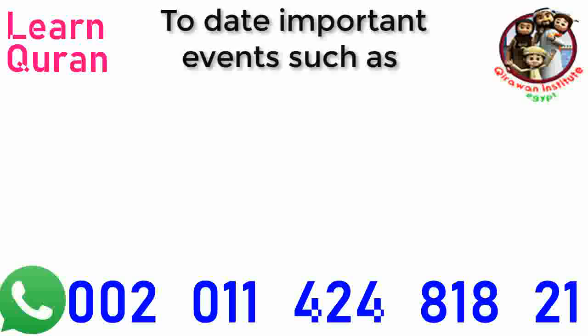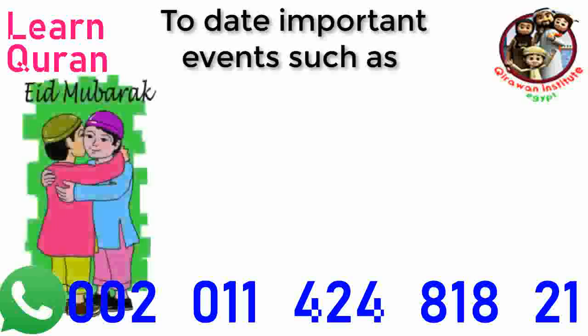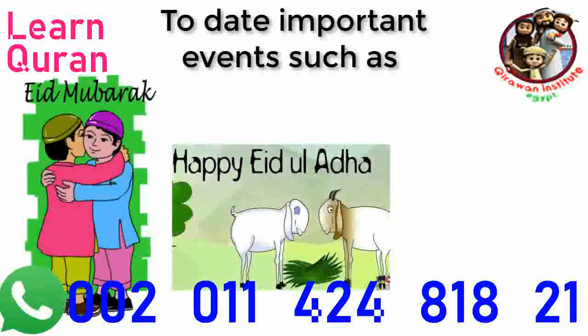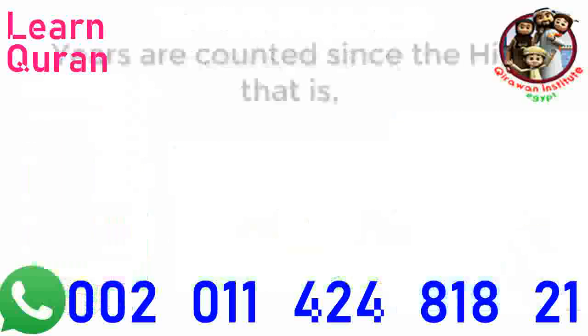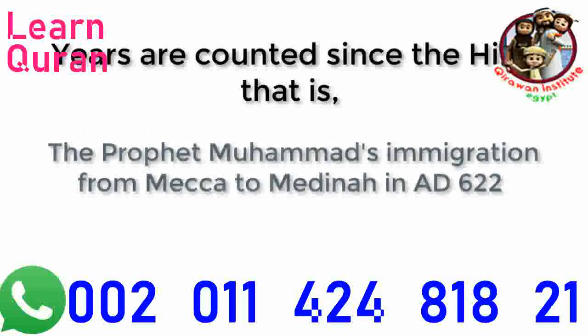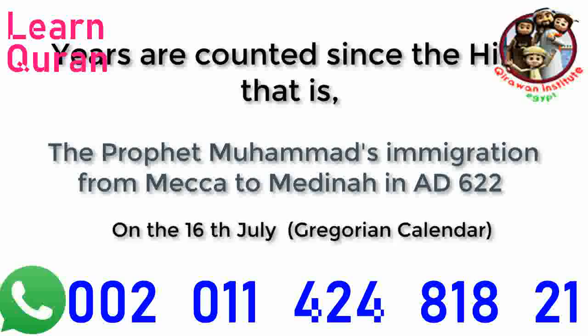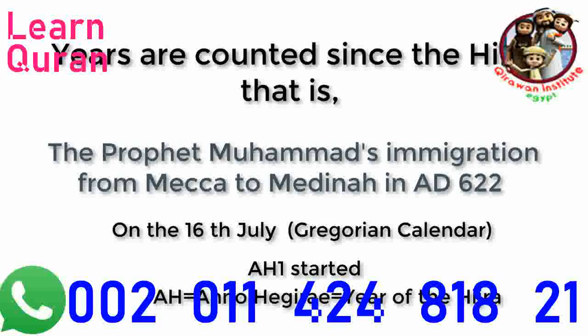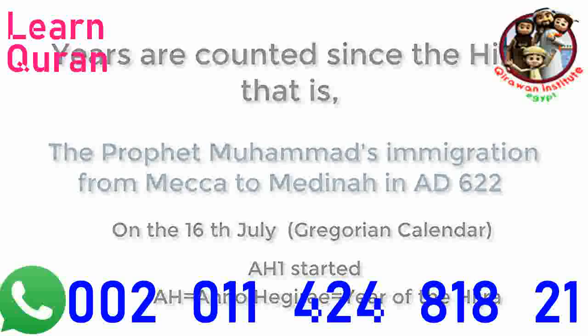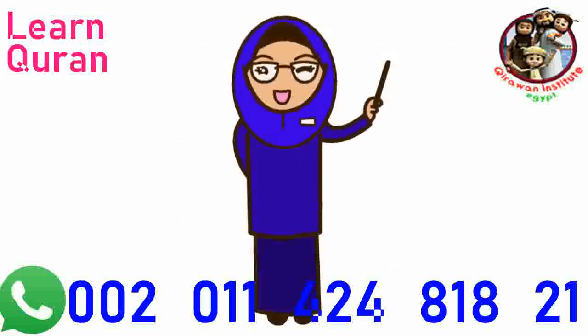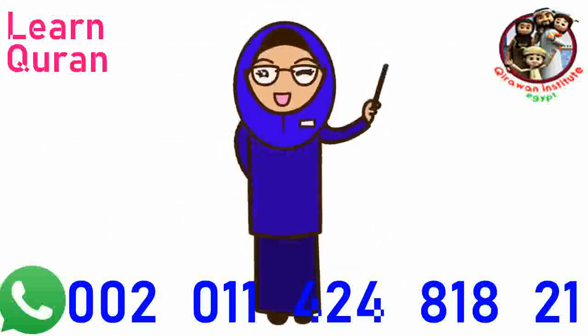The Islamic calendar is used alongside the Gregorian calendar in many Muslim countries to date important events, such as Eid al-Fitr, Eid al-Adha, and the time of the Hajj. Years are counted since the Hijra — that is, the Prophet Muhammad's emigration from Mecca to Medina in 622 A.D. On the 16th of July on the Gregorian calendar, AH-1 started. AH means Anno Hijri, the year of the Hijra. Now let's learn the Hijri months.